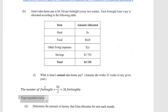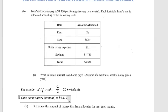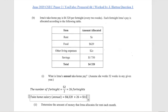So there are 26 fortnights in any given year. Therefore, Irma's annual take-home salary equals $4,320 multiplied by 26, which gives us $112,320. That is Irma's annual take-home salary when she is paid $4,320 per fortnight.